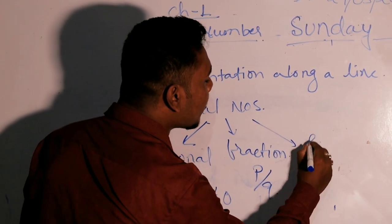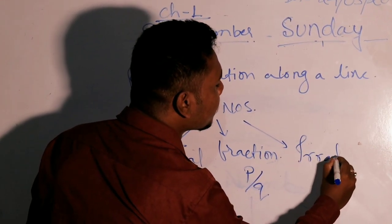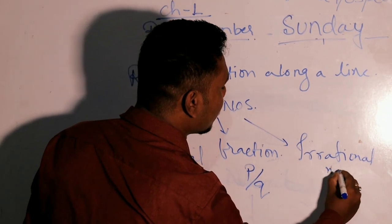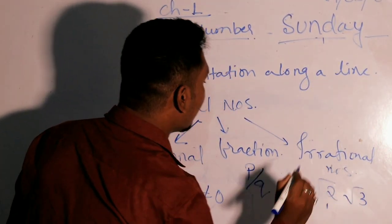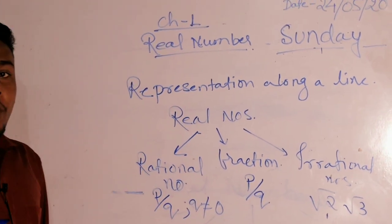And the third is irrational numbers, for example root 2, root 3.